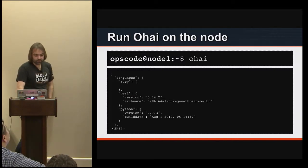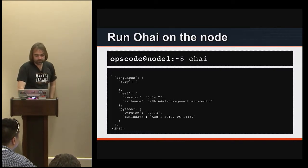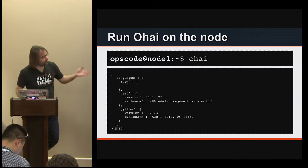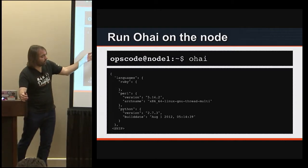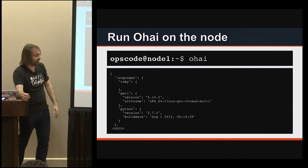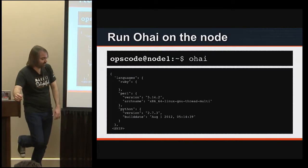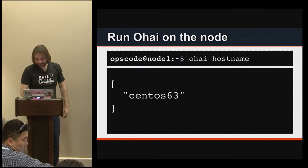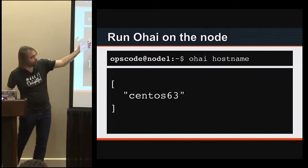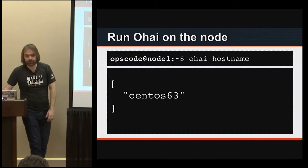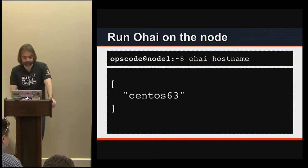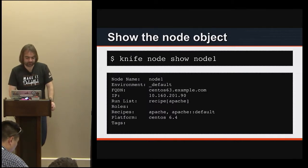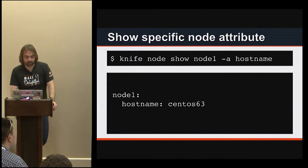The other thing that you can run on the node is Ohai. This is on your node, not on your local machine. You'll get back a bunch of data. By default, it was able to go out and find out what version of Perl you have installed and what version of Python — this is obviously a Red Hat box since we're using a two-year-old version. You can also specify various bits of information like Ohai hostname and it'll give you back the hostname, which is similar to the node object. That's where all that data comes from — it's from Ohai.